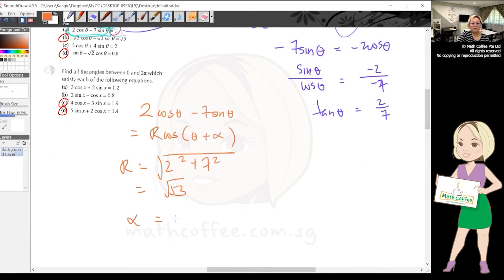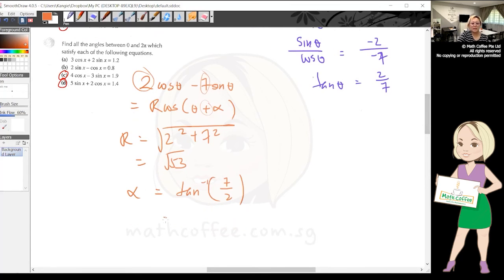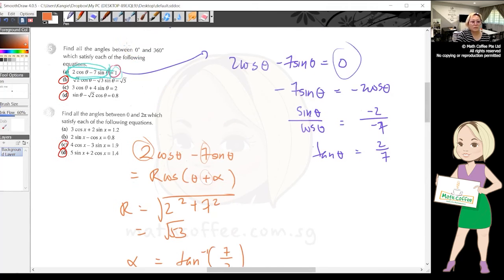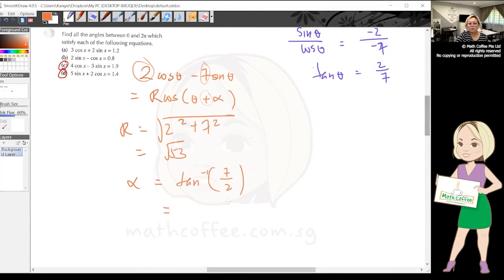And then my α will be tan⁻¹(b/a), so 7/2. Okay, never take the minus - the minus is already in the formula, so you don't care about the minus.